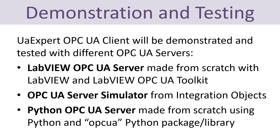You can also double click here in order to change the value for that specific tag. In this tutorial I will test this UAexpert OPC UA client with three different OPC UA servers. First, I will test it with an OPC UA server made in LabVIEW using the LabVIEW OPC UA Toolkit. Then I will test it with a demonstration server called OPC UA Service Simulator from Integration Objects, which you can download for free. And finally, I will test it with an OPC UA server made with Python.